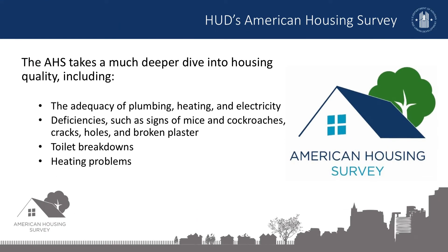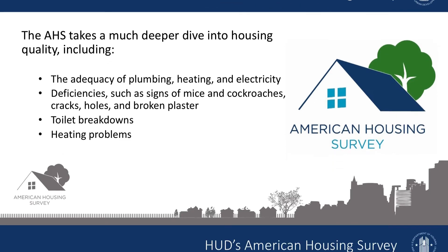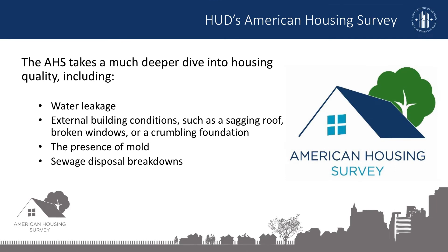The AHS takes a much deeper dive into housing quality, including the adequacy of plumbing, heating, and electricity, deficiencies such as signs of mice and cockroaches or cracks, holes and broken plaster, toilet breakdowns, and heating problems, including breakdowns and utility interruptions, inadequate insulation, or the cost of heating. The AHS also delves into housing quality issues like water leakage, external building conditions such as a sagging roof, broken windows, or a crumbling foundation, the presence of mold, and sewage disposal breakdowns.